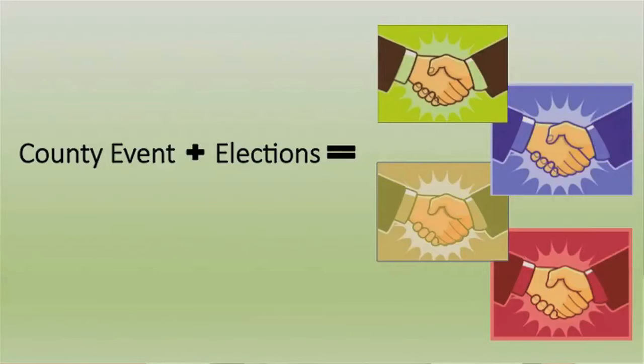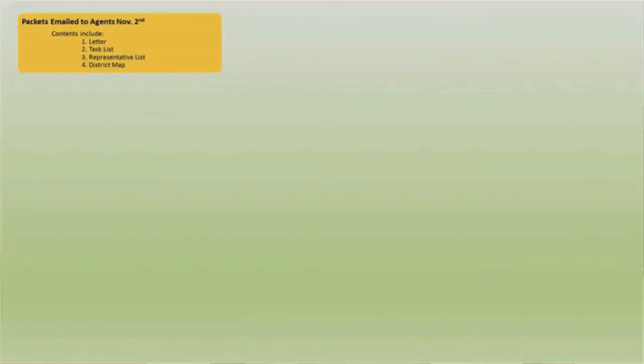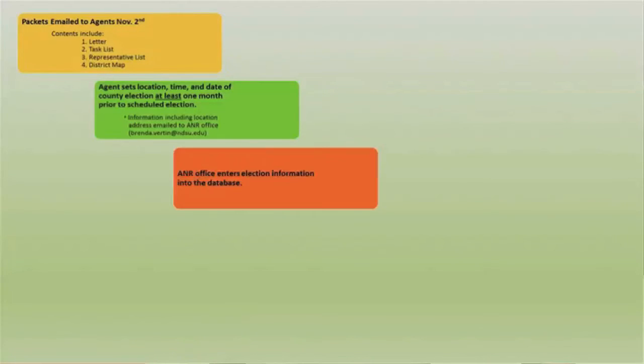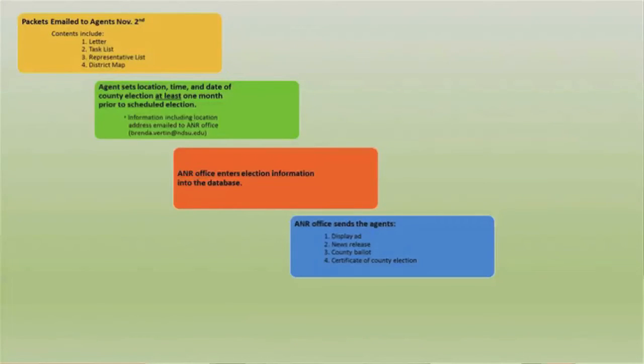How are county elections planned? Emails are sent out in November to counties required to hold elections for the next year. Some commodities allow elections to be held as early as December, while others require a January 1st or later date. The emails are sent by the ANR Program Leader's Office, except for the soybean election information, which will come directly from the North Dakota Soybean Office. Once the agent receives the email, they are asked to set the date, time, and location of the county election, and then send that information, including the address of the election site, to the ANR Program Leader's Office — the earlier the better. An email will then be sent to the agent with the newspaper ads, news release, ballots, and certificate for the election.